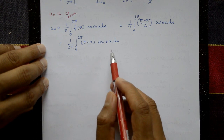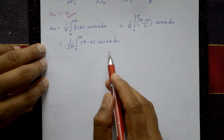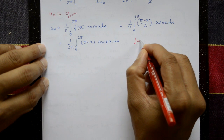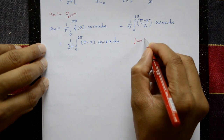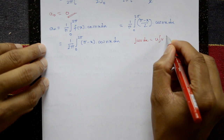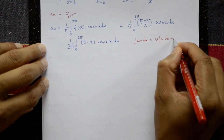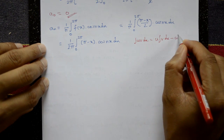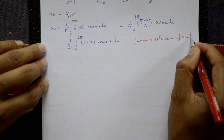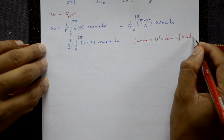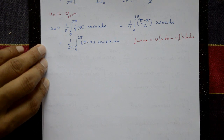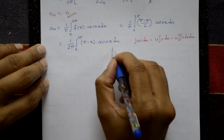Now applying Bernoulli's rule: ∫u·v dx = u·∫v dx - u'·∫∫v dx + ... and so on.